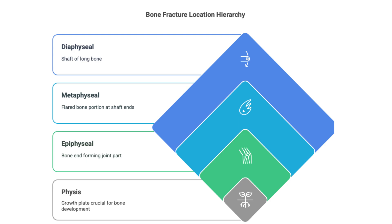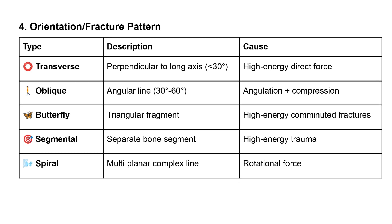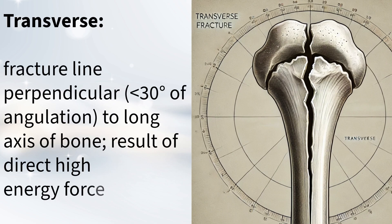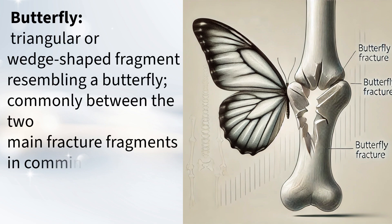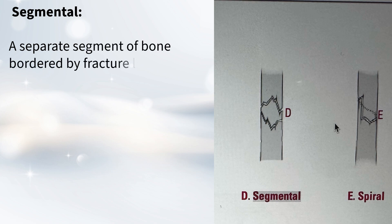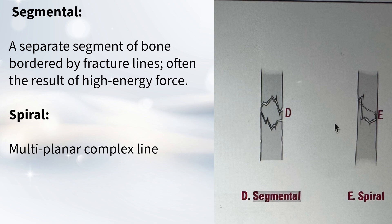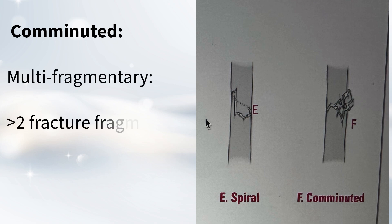So we know which bone and exactly where on the bone. Now, what about the way the bone actually breaks? That's where we get to orientation and fracture pattern. There are quite a few different ways a bone can break. We have the transverse fracture — a straight line across the bone. An oblique fracture is angled. Then there's the butterfly fracture, where you get a central triangular fragment that breaks off. A segmental fracture is where a completely separate piece of bone breaks off. Spiral fractures often happen from a twisting force, giving that spiral corkscrew pattern. And comminuted or multifragmentary fractures are when the bone breaks into more than two pieces.